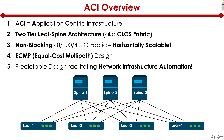An important element from the ACI design perspective is the predictable nature of this design. In the three-tier architecture, we sometimes had collapsed core, where core and distribution were collapsed into a single layer. Sometimes you'd have a single link or an EtherChannel between core layers, which created a lot of one-off snowflake-type designs. When it comes to automation, we don't want any snowflake design — we want a predictable design that is always the same across the board, because that's what facilitates network infrastructure automation.